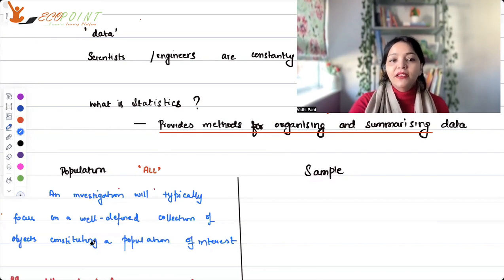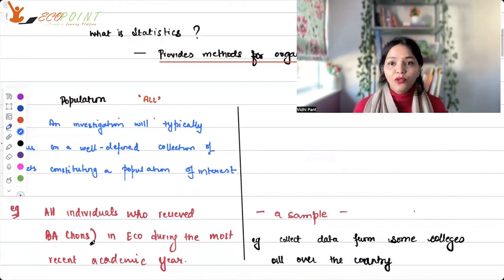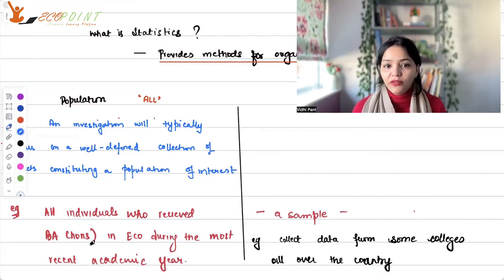An investigation will typically focus on a well-defined collection of objects, constituting a population of interest. For example, I want to have the data for students who receive BA economics honors during the most recent academic year. So if I'm taking the data for all such individuals, that would be population.